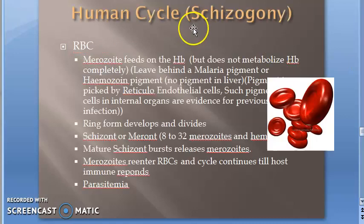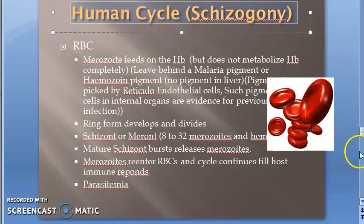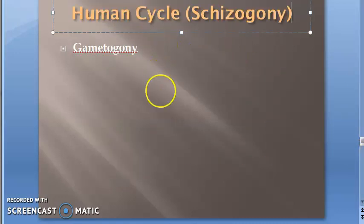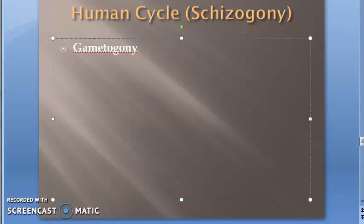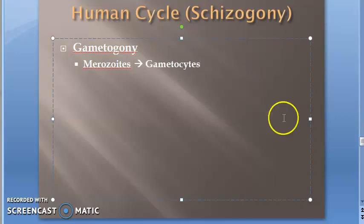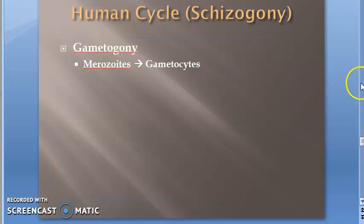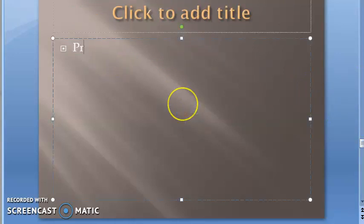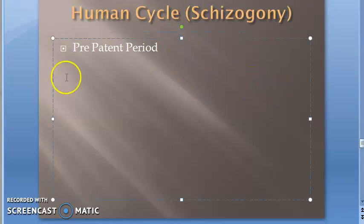Now we move to gametogony. Some merozoites become gametocytes instead of continuing the erythrocytic cycle. There are also important terminologies such as pre-patent period and incubation period that we will cover in the next video.